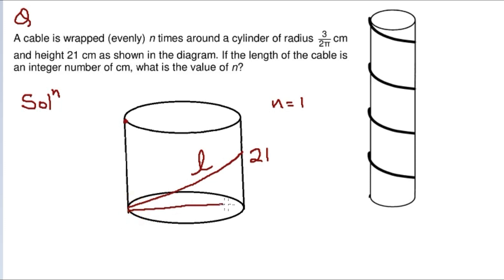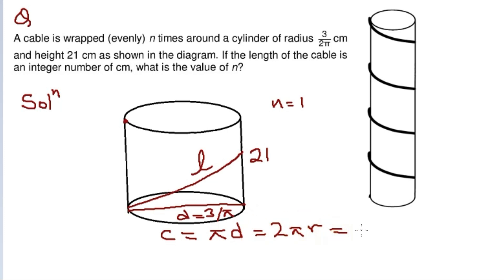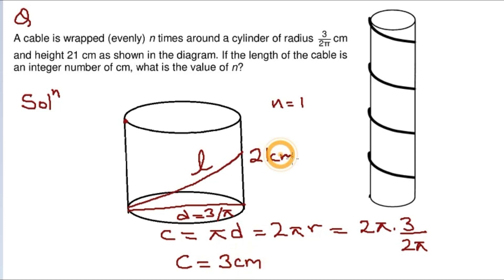The radius is 3/(2π), so the diameter is 3/π. The circumference is 2πr, which equals 2π times 3/(2π). The 2π cancels, so the circumference equals 3 centimeters.